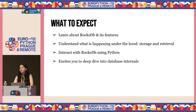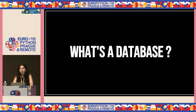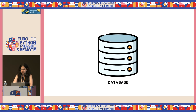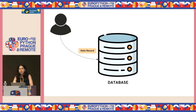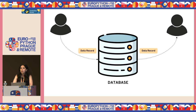Starting from the absolute basics — what's a database? On the most fundamental level, a database should do two things. When you give it a data record, it should store that data record. And when you ask for that data record again, it should give it back to you. Simple.